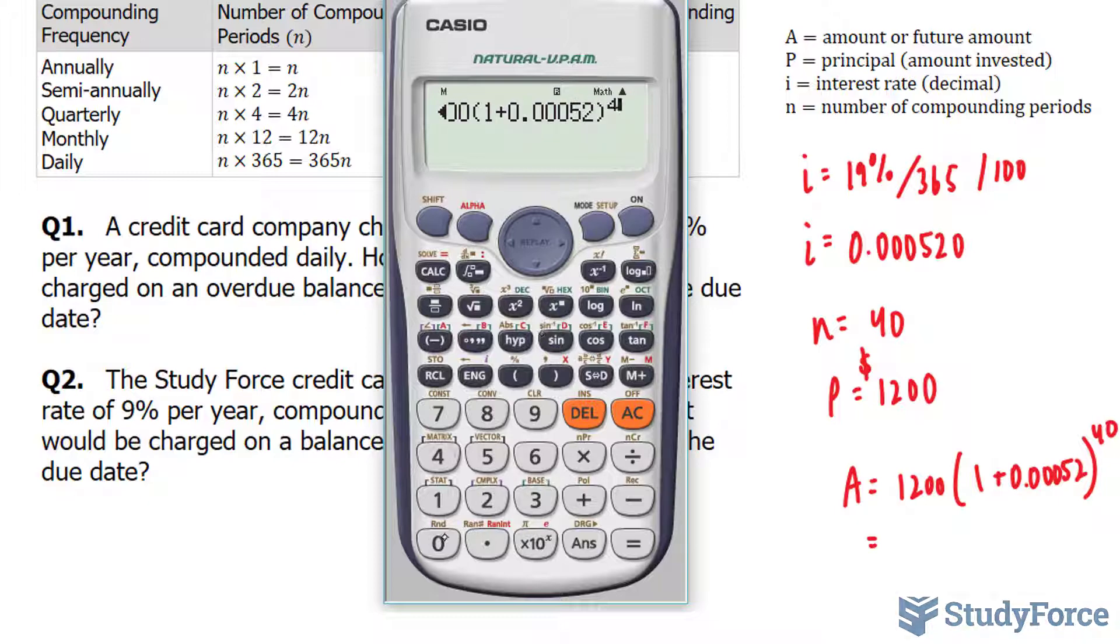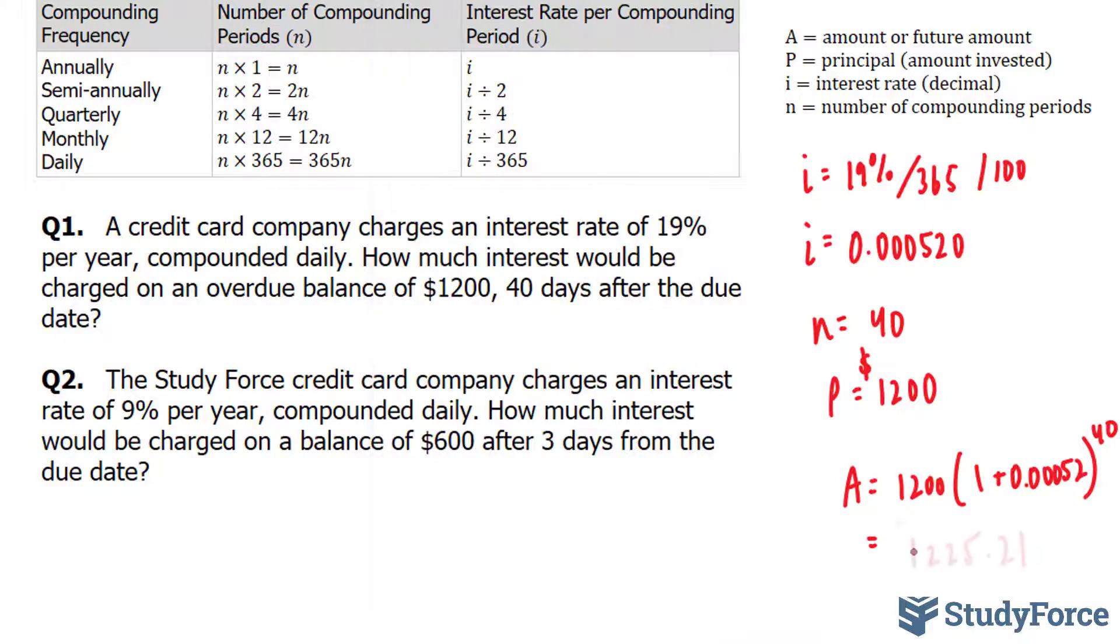And this gives us 1,225.21. So this person owes technically $25 after not paying this for 40 days. And it's only going to get larger.